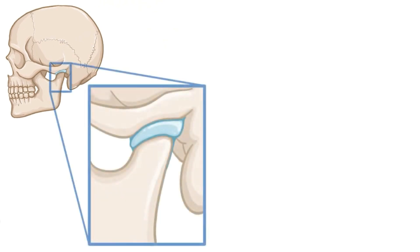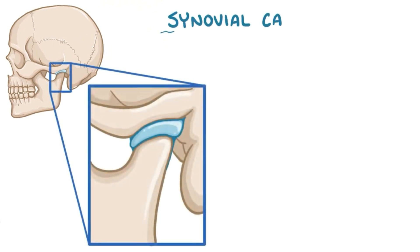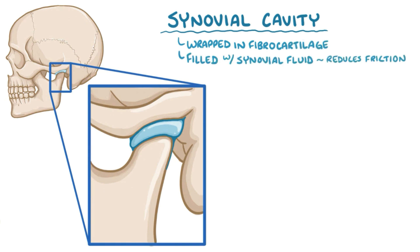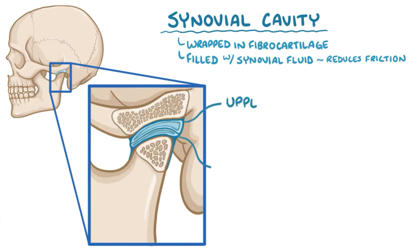Normally, between the temporal bone and the mandible is a synovial cavity, which is wrapped in fibrocartilage and filled with synovial fluid — a protein-rich fluid that reduces friction between the sliding bones. The synovial cavity is divided into an upper and lower compartment by an articular disc within the synovial fluid.